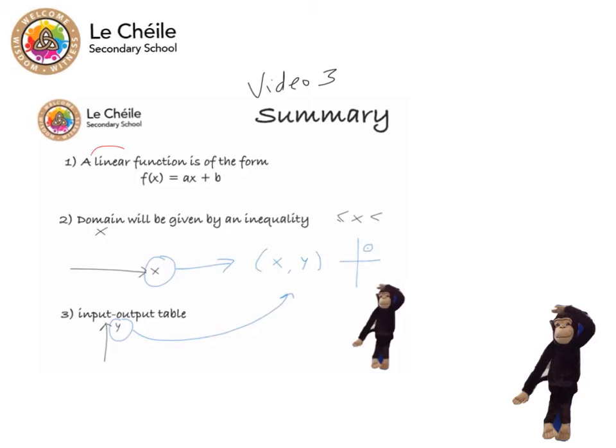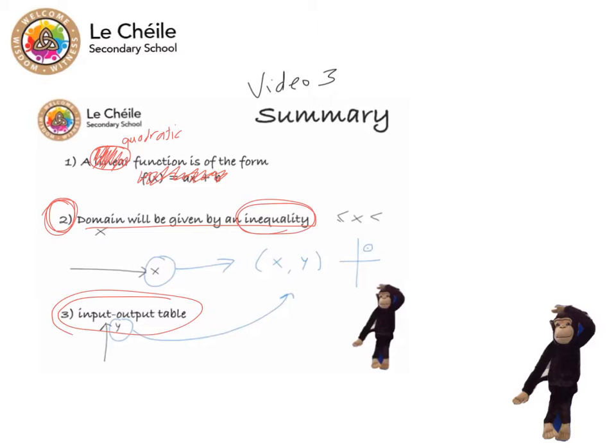Now in video 3 we used a linear function, but in video 4 here we're going to look at a quadratic function. And how we do the question is going to be the same. It will look a little bit different here because it will be a quadratic. We'll still be given a domain with an inequality, and we'll create an input-output table again.